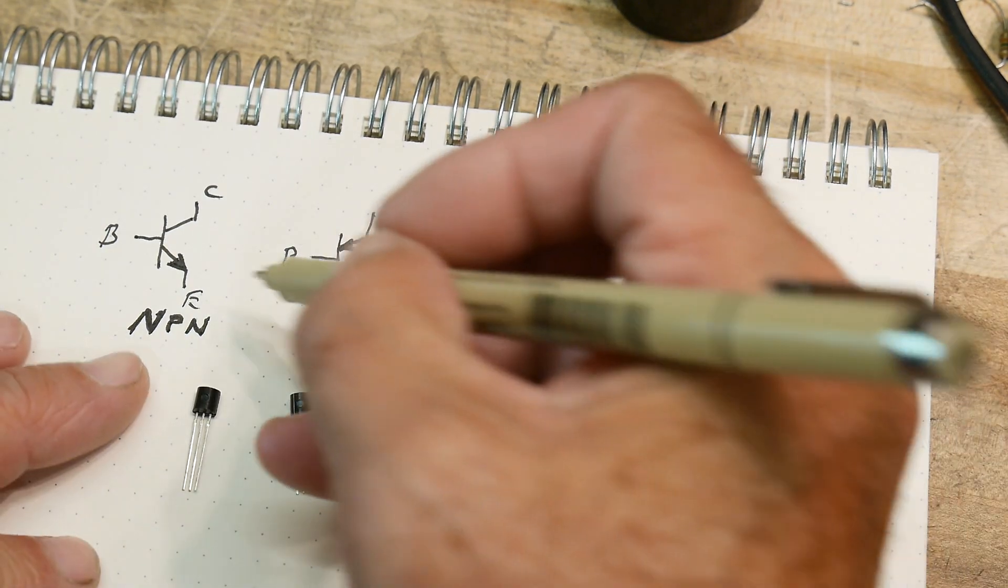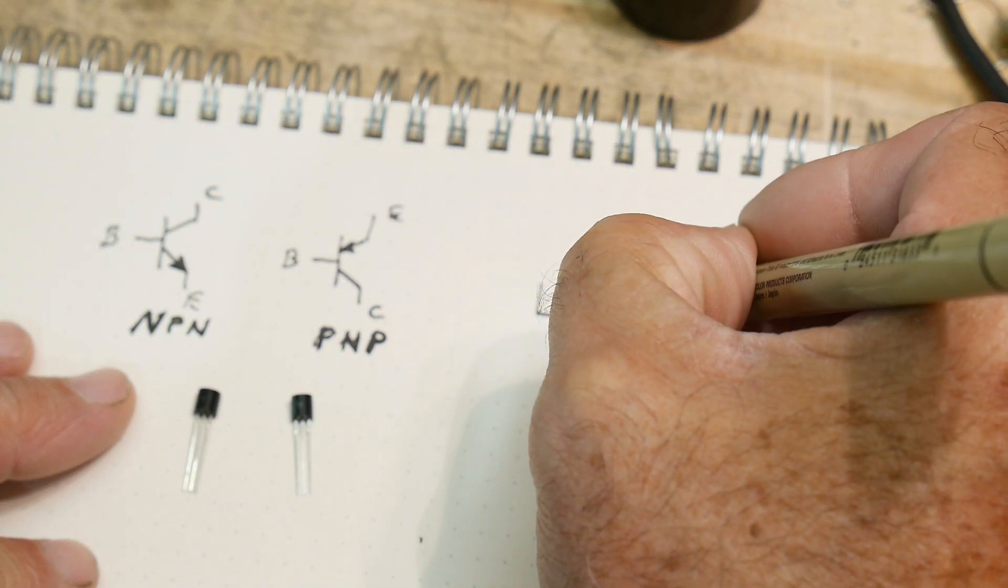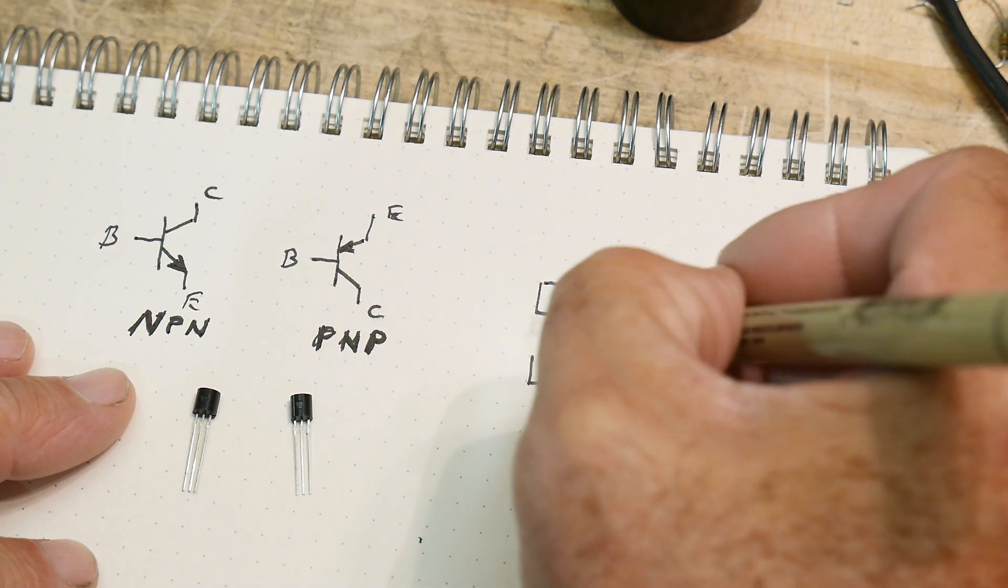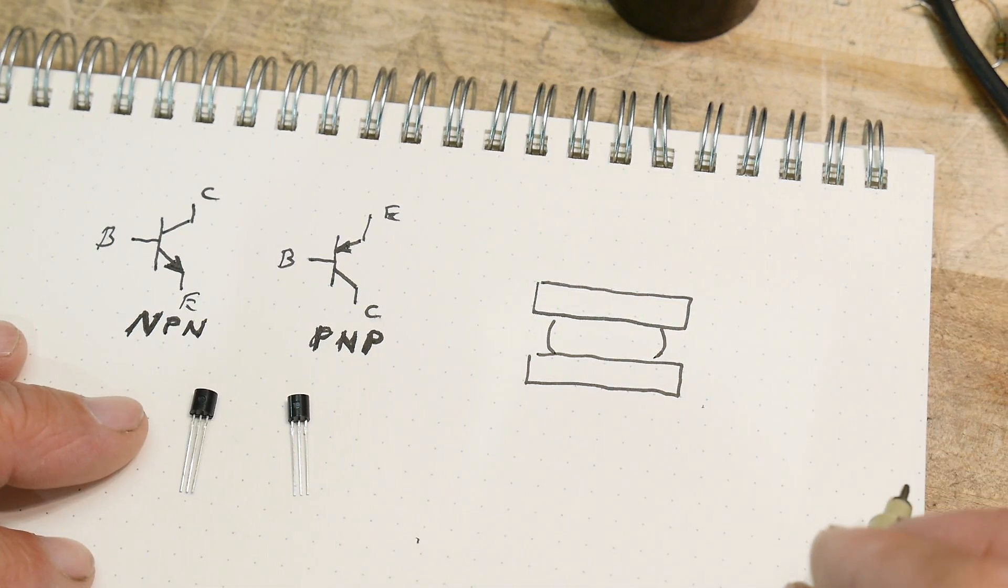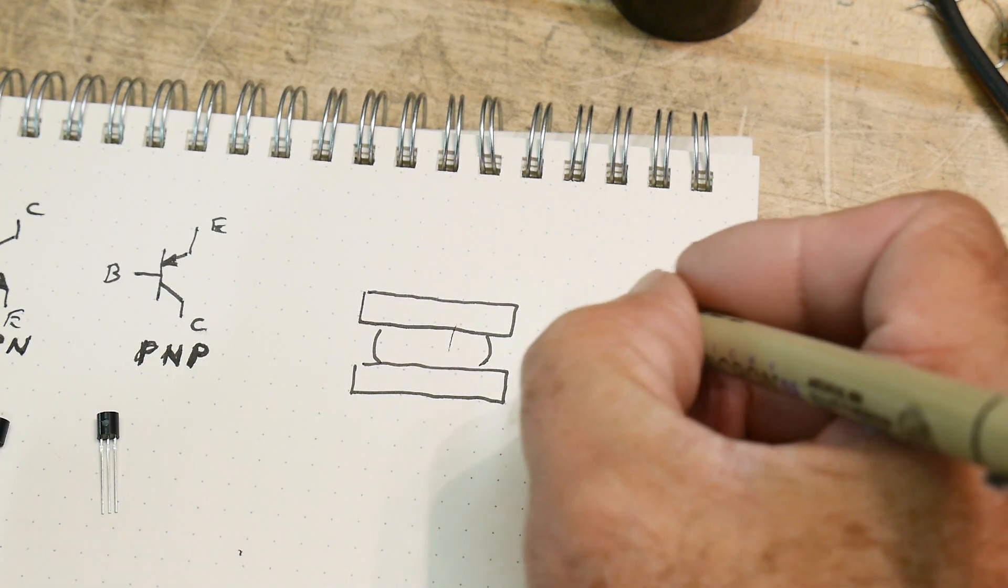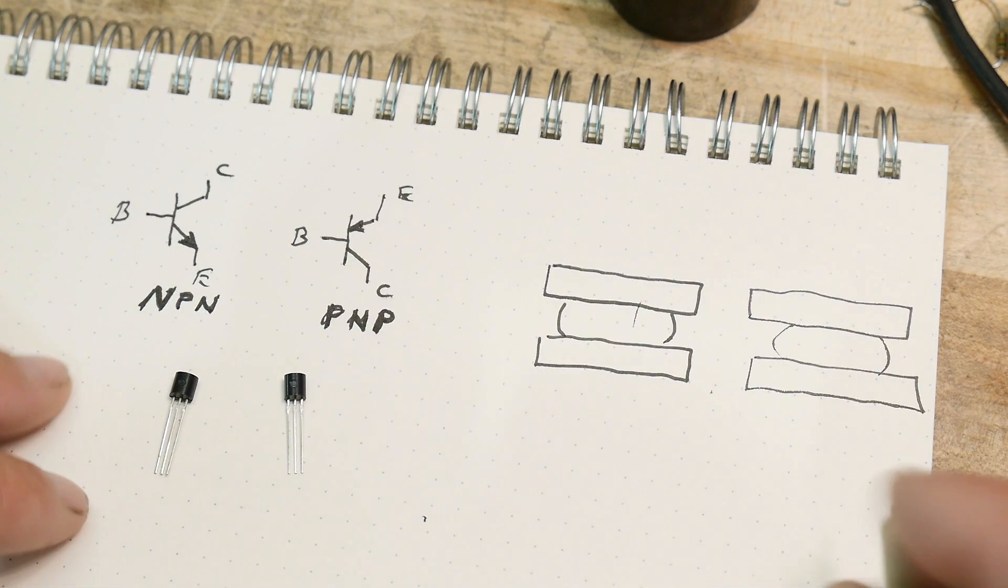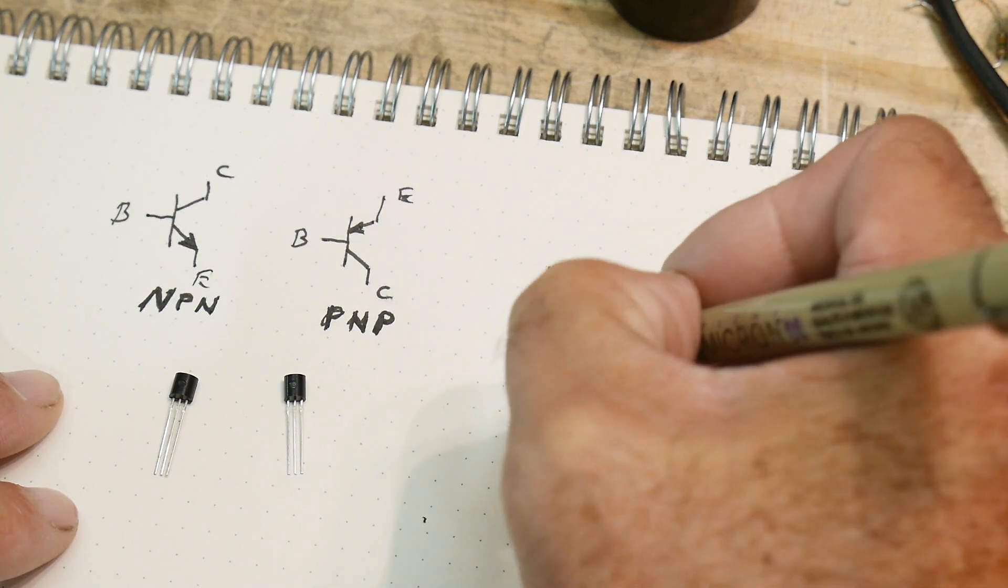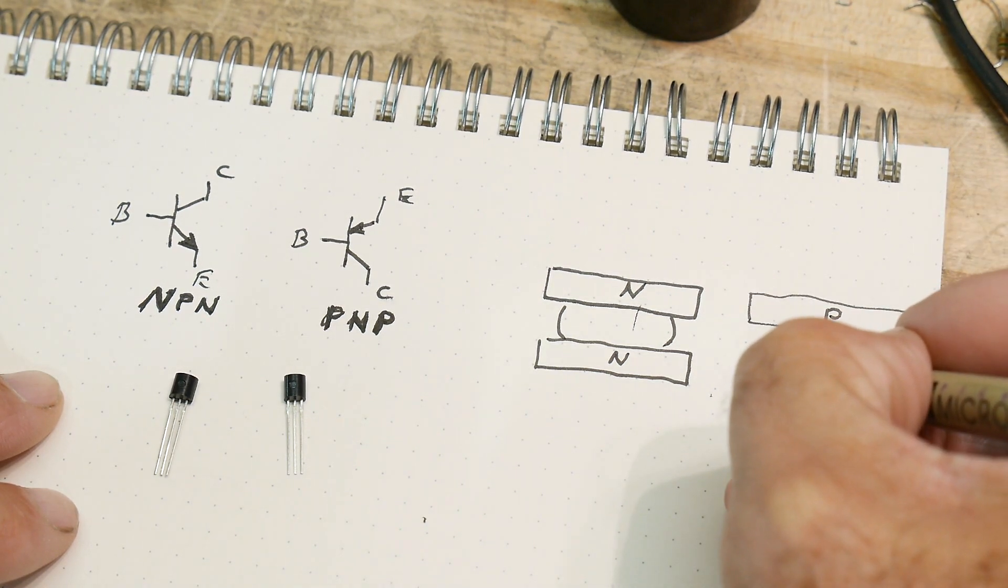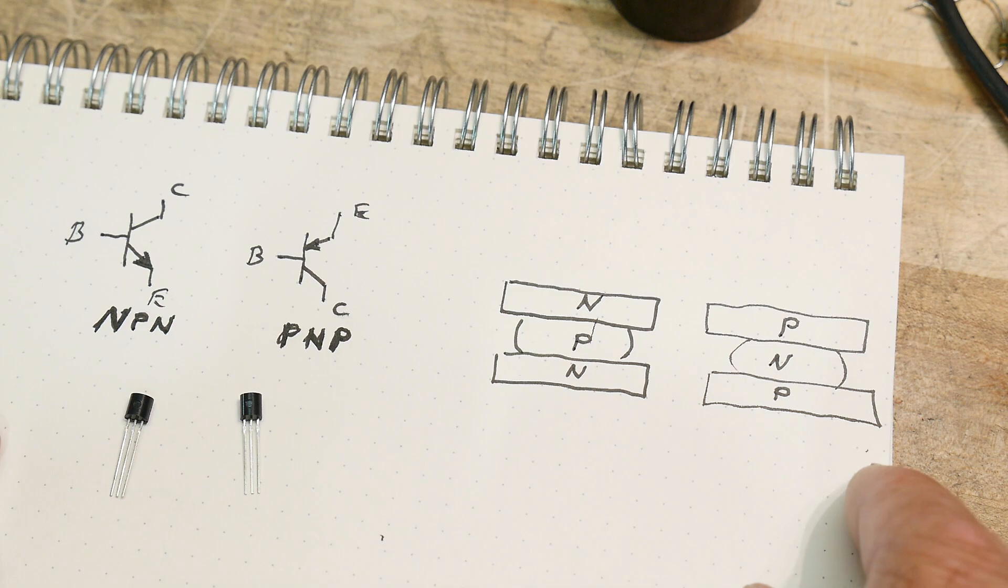And we want to figure out which one of these is the NPN and which one is the PNP. So let's take a look at them side by side. Well, they look identical. There's the little black things, one side's flat, one side's round. They look totally identical. There's no way to tell from the outside which is which. Alright, so let's talk about why do they call it NPN and why do they call it PNP. And that's because these are made, these are like Oreo cookies. We have an Oreo cookie, and we have the outside, and then we have the filling.